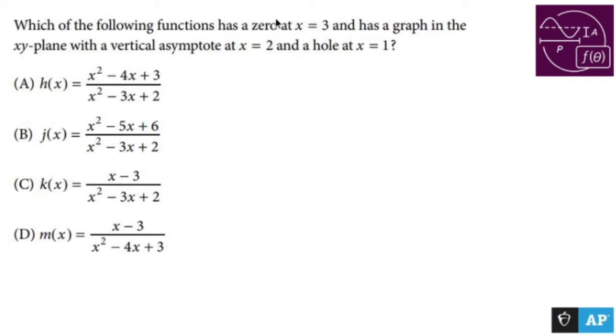Which of the following functions has a zero at x equals three and has a graph in the xy plane with a vertical asymptote at x equals two and a hole at x equals one?